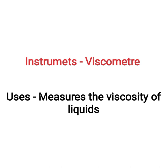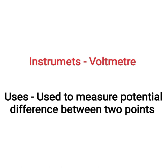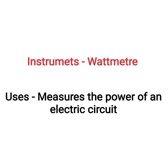Instrument voltmeter: used to measure potential difference between two points. Instrument wattmeter: measures the power of an electric circuit.